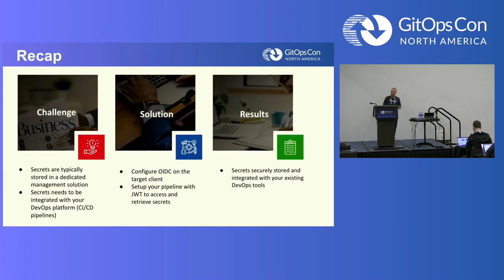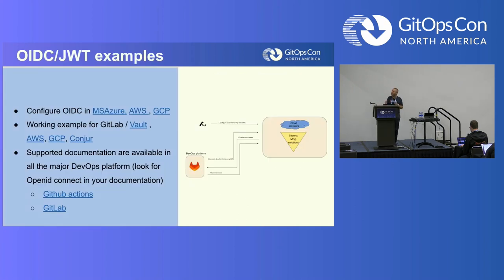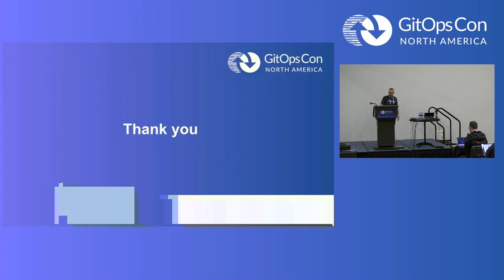Lastly, if there is one slide I want you to remember from this lightning talk, it's this one — basically a recap of the entire presentation. The challenge: secrets are typically stored in a dedicated management solution, but they need to integrate with our DevOps platform, meaning our CI/CD pipeline. The solution: if you don't have a built-in integration, configure OpenID Connect on your provider and set up your pipeline to use JWT to retrieve those secrets. The result: secrets are securely stored and integrated with your existing DevOps tools. I've created one slide with working examples you can simply use — all you need to do is go to your provider's documentation and look for OpenID Connect or OIDC, and you'll immediately find it. Thank you, and I hope you enjoyed this talk.